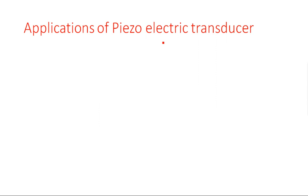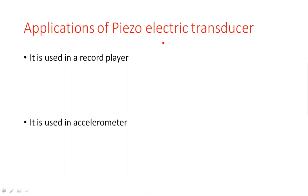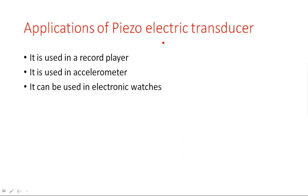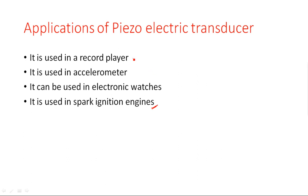Applications of the piezoelectric transducer include record players, accelerometers, electronic watches — because it has an internal oscillator that changes its oscillations when pressure is applied — and spark ignition engines. In this video we have covered the basic diagram, working principle, advantages, disadvantages, and applications of the piezoelectric transducer.